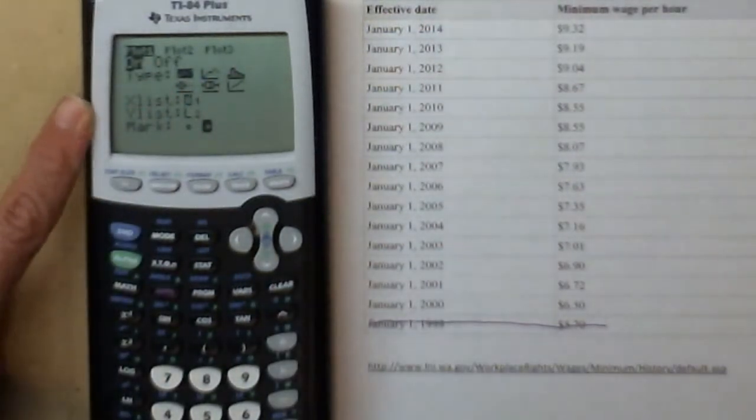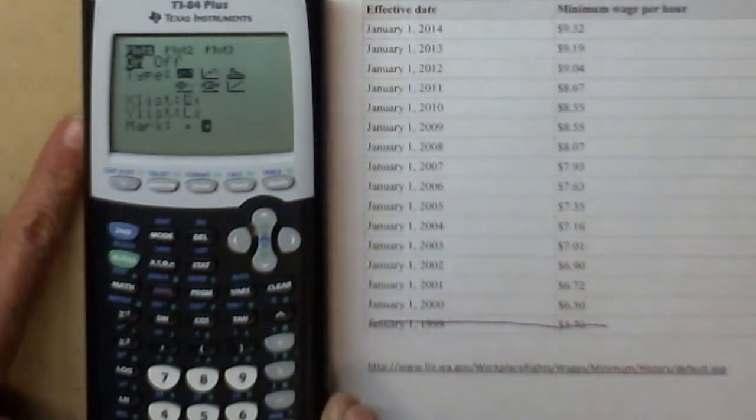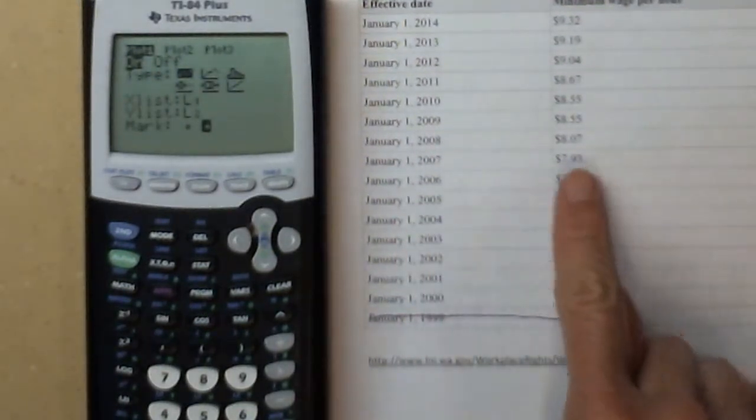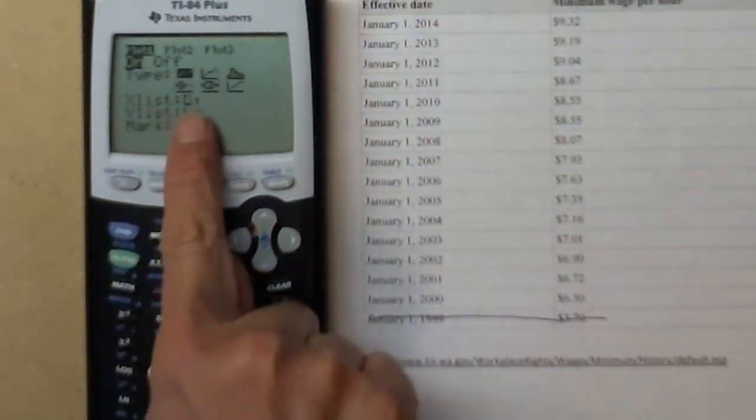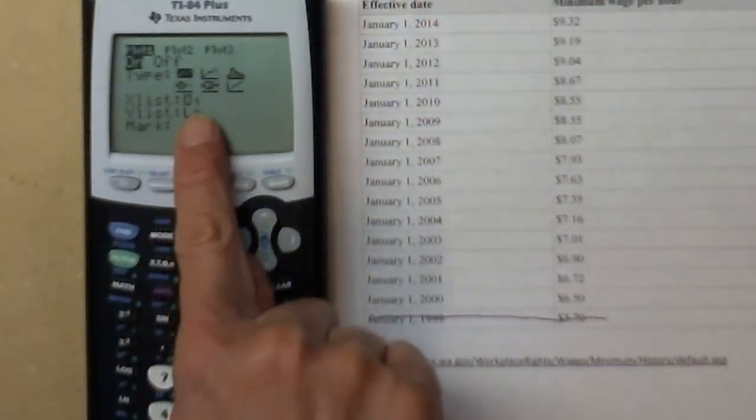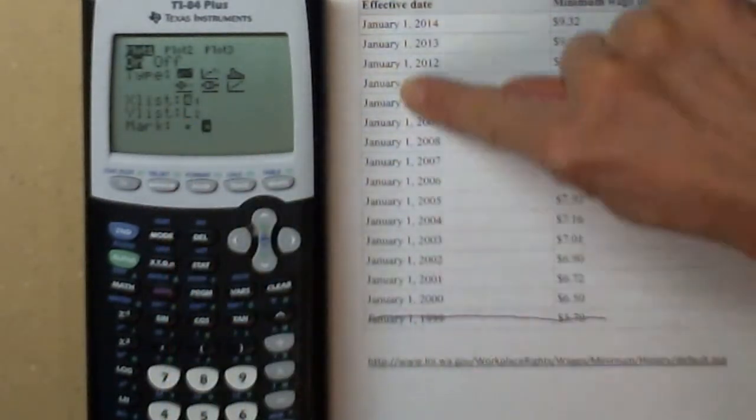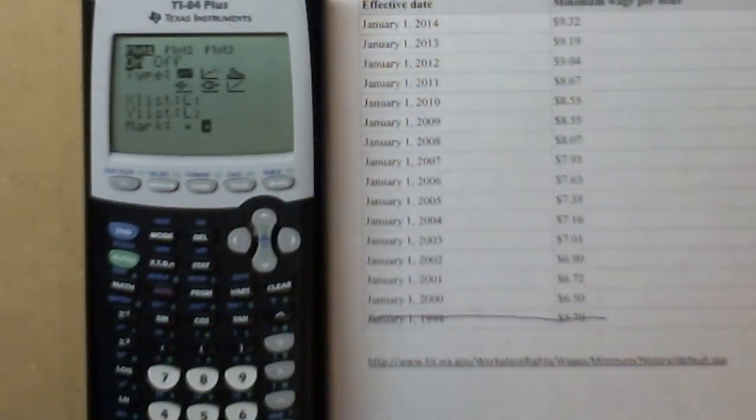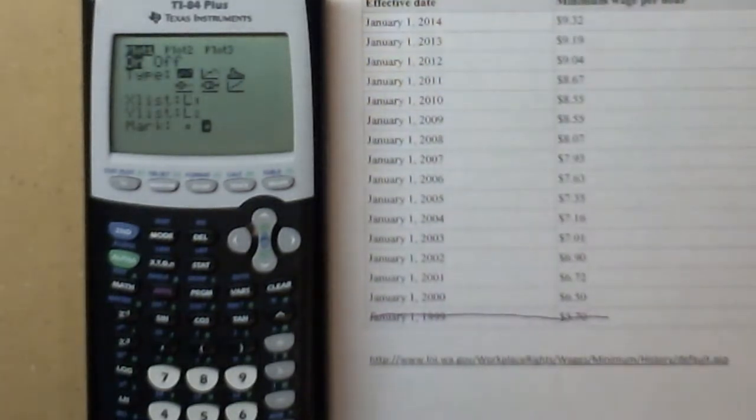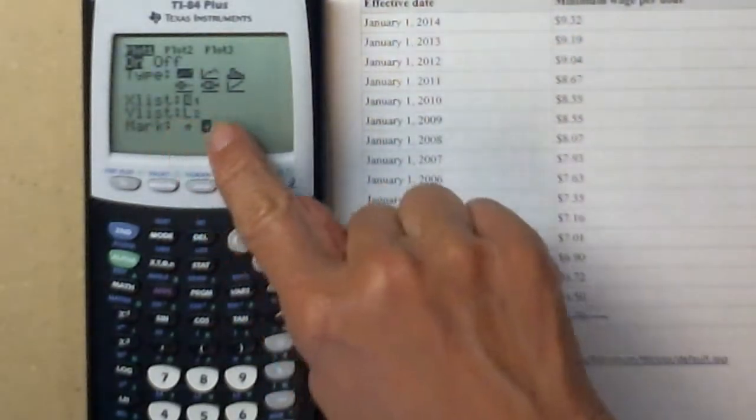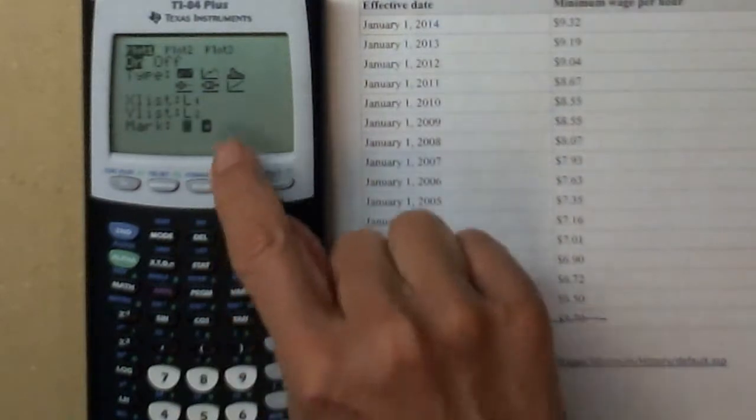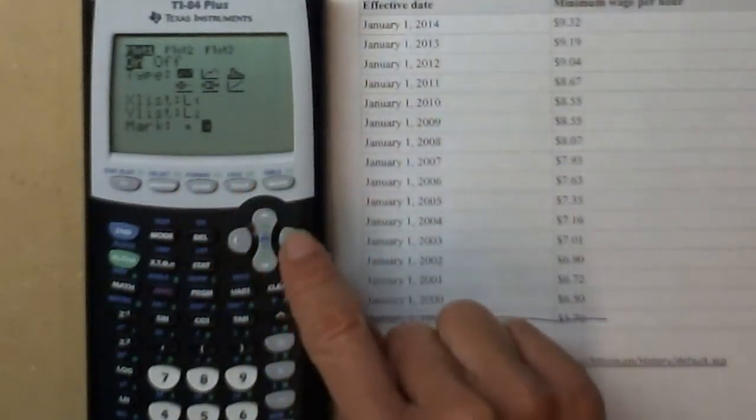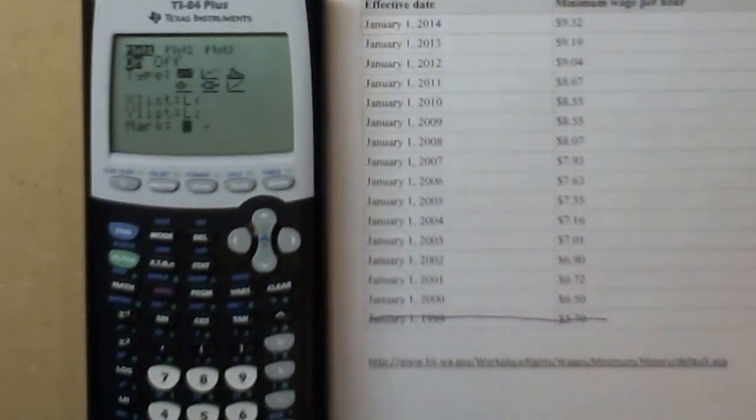I'm doing a time series graph. I want my time to be along the x-axis. My x-list is, I put my years in L1, so I'm going to keep that L1. My minimum wage is going to change over time, so I'm going to have my different minimum wages in the y-position. So y-list is L2. Then you can choose which of these three marks to put there by hitting enter.